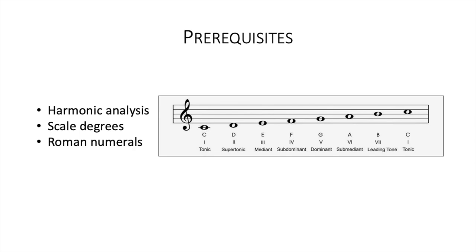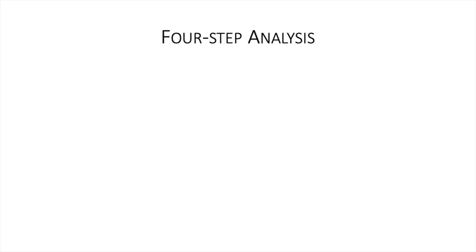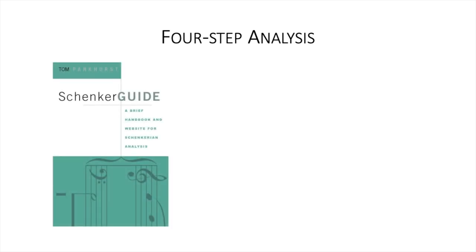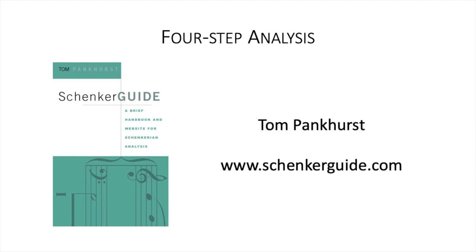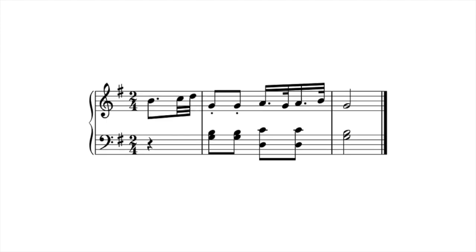So we're going to follow a simple four-step method to go through a piece of music in all its detail to finding the underlying Ursatz. Note that this method and the example we're going to use has been taken straight from Tom Pankhurst's book, Schenker Guide, which also has a website with lots of great exercises for learning and practising Schenkerian Analysis. The link to that can be found in the description. We're going to use a very short, very simple example. Let's have a listen to it.